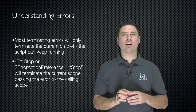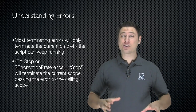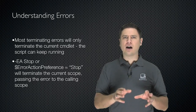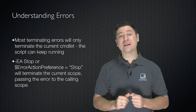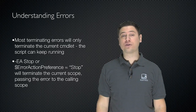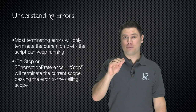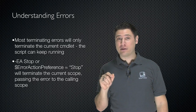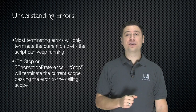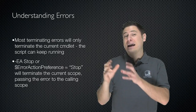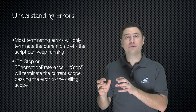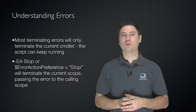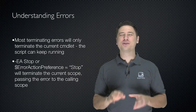Most terminating errors will only terminate the current cmdlet — the entire script can still keep running. Get-WmiObject is a great example. If you've got a script doing a bunch of stuff and it calls Get-WmiObject, and that fails because the remote computer is turned off, the cmdlet will fail but the script can still keep running. However, if you add -EA Stop or set $ErrorActionPreference to stop, that causes the error to become a terminating error for the entire scope — essentially stopping the entire script at that point.